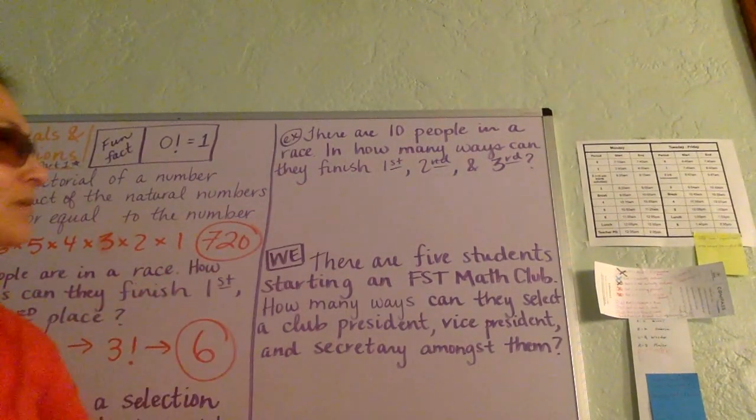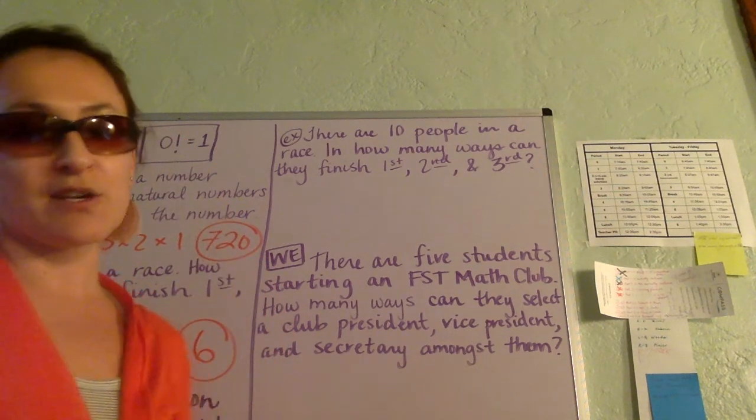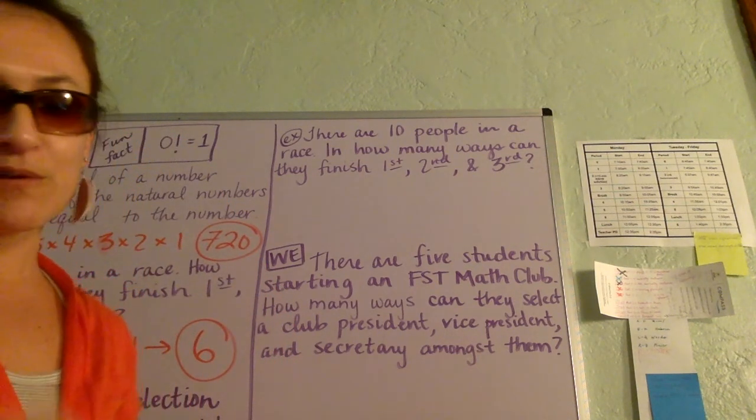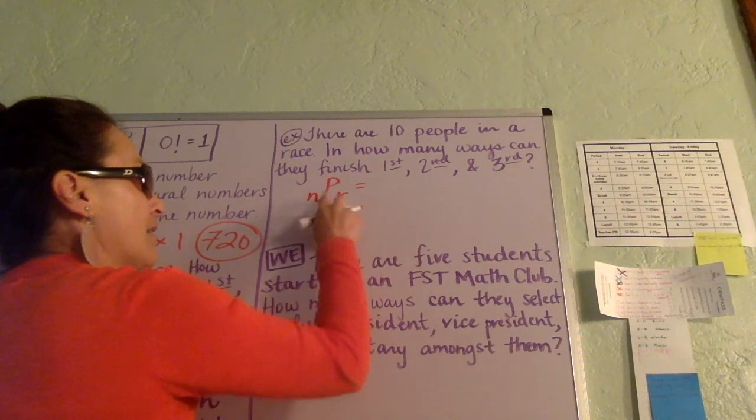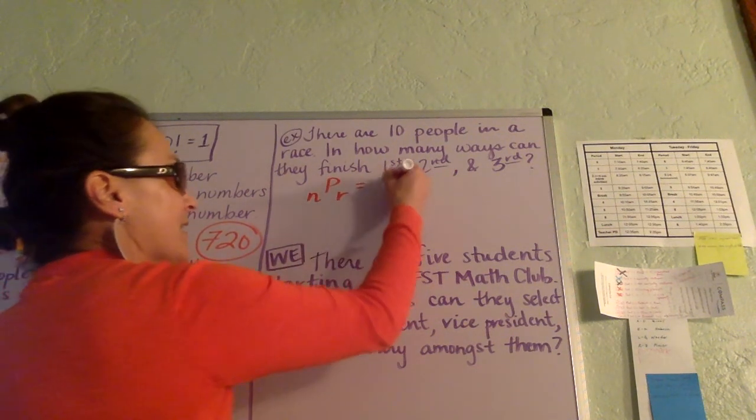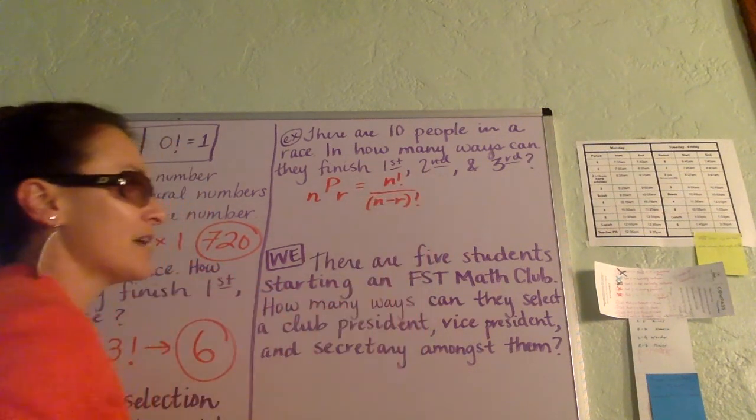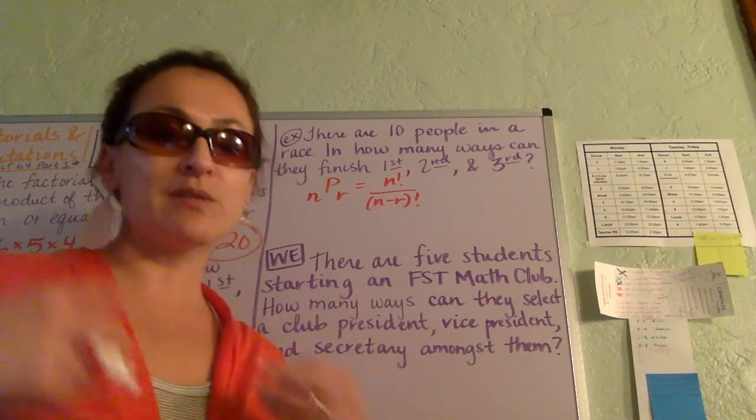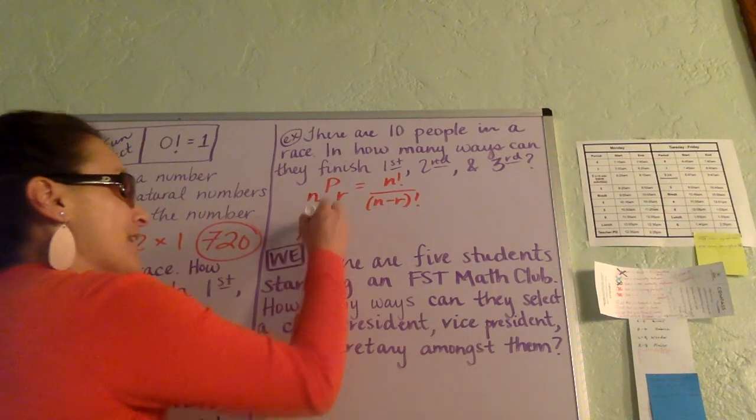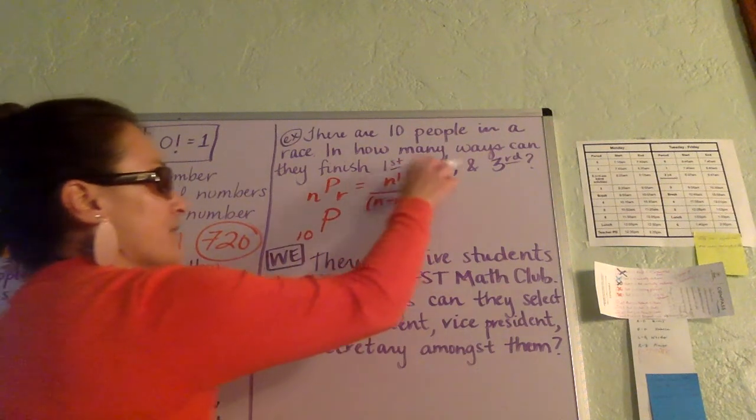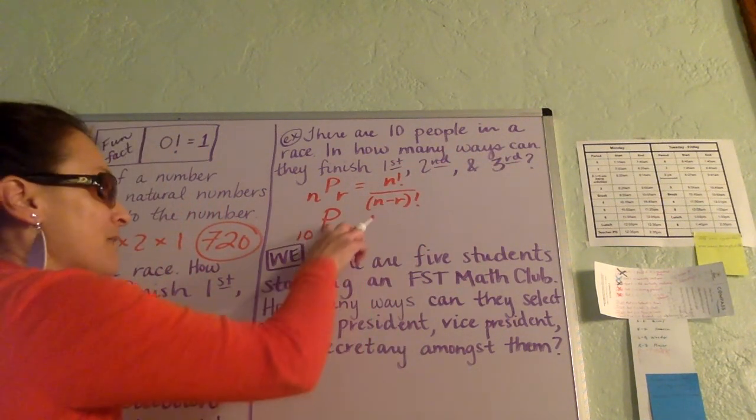In this example, there are 10 people in a race. How many ways can they finish first, second, and third? Let's just remember our formula: n permutation r is n factorial over (n minus r) factorial. In this case, how many people in total did we have in our race? We had 10, so that's our n. And then we want to pick and rank one, two, three of them. So it's 10P3.